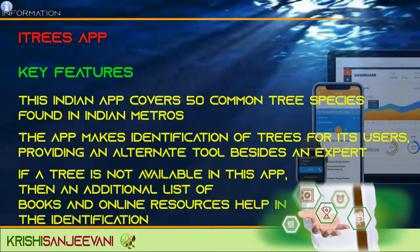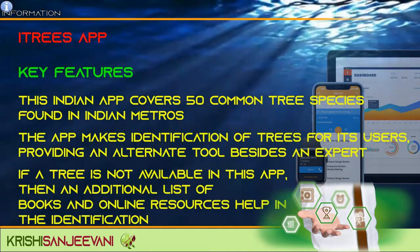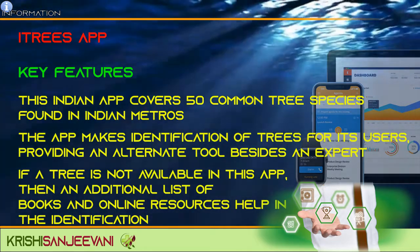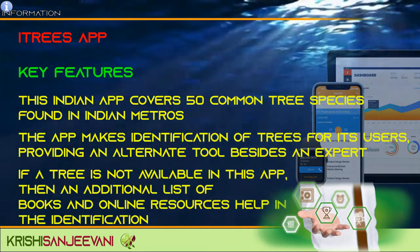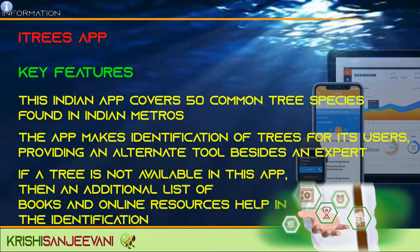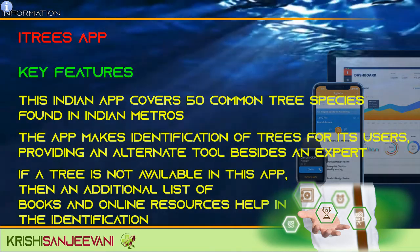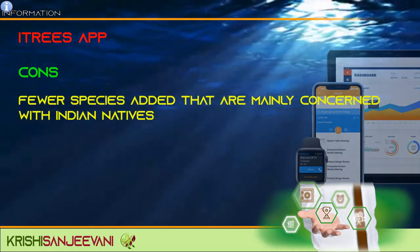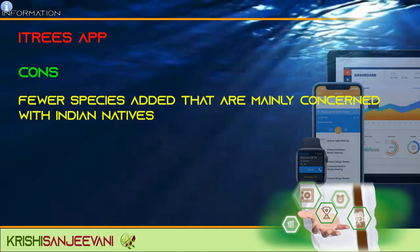iTrees app. Key features and pros: this Indian app covers 50 common tree species found in metros such as Mumbai, Kolkata, New Delhi, and Hyderabad. The app helps users identify trees, providing an alternate tool besides an expert. If a tree is not available in the app, an additional list of books and online resources helps with identification. Cons: Fewer species added, mainly concerned with urban natives.